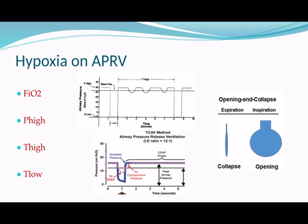The second thing you can do is increase your T-high — the amount of time you've kept the lung at that high pressure. Inevitably, with every release of breath, you're reducing the pressure down, and some of those alveoli that need that high pressure to stay open might just collapse down. If they're collapsing down, they're not partaking in oxygenation. So you could increase the P-high and also increase the T-high — the time the lung is held at that high pressure.